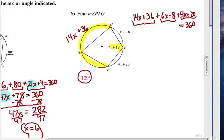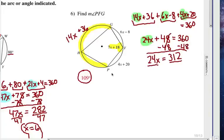Now, let's combine like terms. 24x plus 48 equals 360. Then we're going to subtract 48 from each side. And divide both sides by 24. X equals 13. Now am I done? No. Reread the problem.